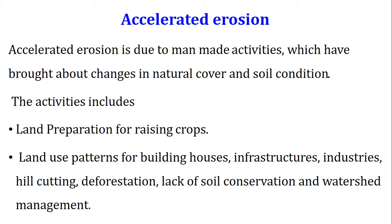Accelerated erosion is due to man-made activities which have brought about changes in natural cover and soil condition. These activities include land preparation for raising crops, land use patterns for building houses, infrastructure, industries, hill cutting, deforestation, and lack of soil conservation and watershed management.